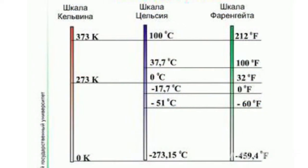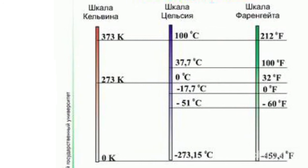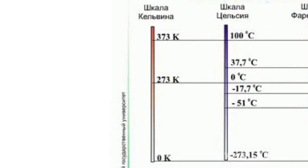Many previously used temperature scales, such as the scales of Rømer, Newton, Rankine, and Réaumur, can now be of only historical interest. Nowadays, there are three temperature scales that are actually used.